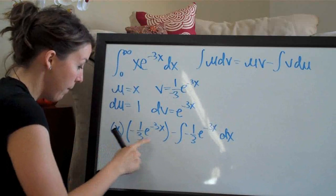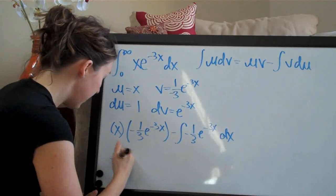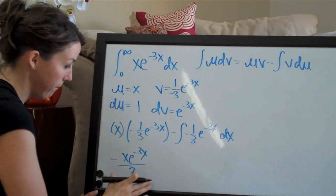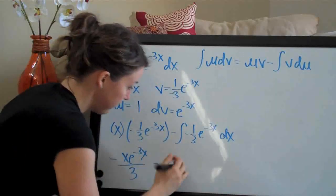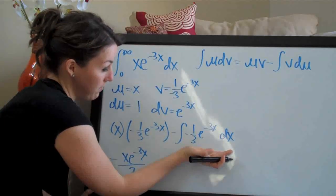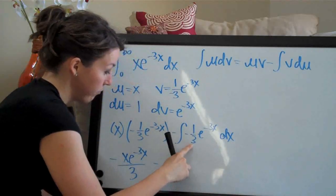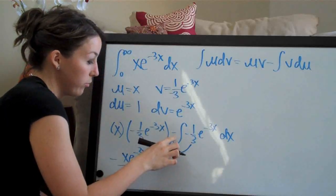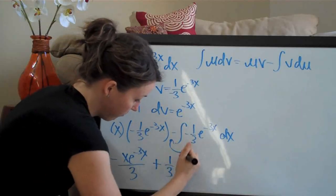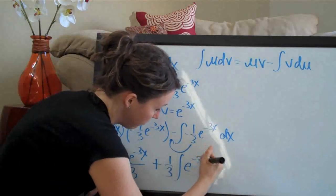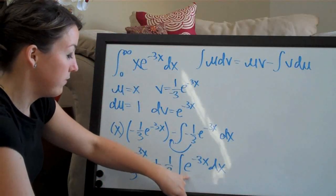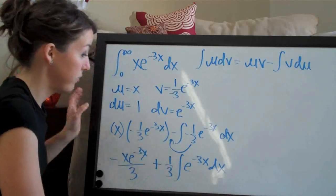Let's simplify. Out in front we have negative x e to the negative 3x over 3. Then we bring the negative one-third out in front of the integral as a coefficient. Because we have minus a negative, that becomes plus one-third. So we're left with negative x e to the negative 3x over 3 plus one-third times the integral of e to the negative 3x dx. All we have left in the integral is e to the negative 3x, which we can integrate directly.